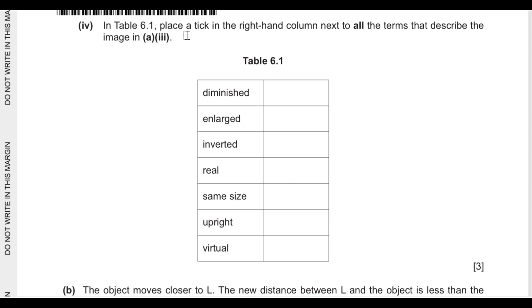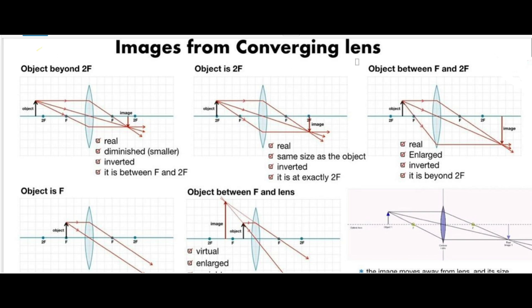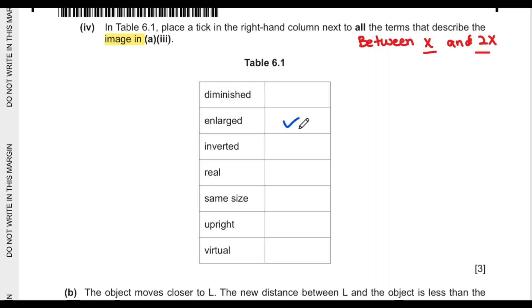Question 4 says in table 6.1 place a tick in the right hand column next to all terms that describe the image. Is the image diminished, enlarged, inverted, real, same size, upright, or virtual? The object is placed between focal length and twice focal length. You can see the image is formed by actual meeting of lines, so the image is real. The image is larger than the object and the image is also inverted. So enlarged, real, and inverted image is formed.